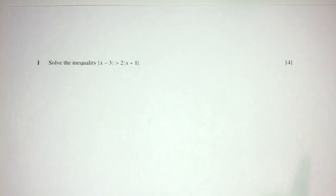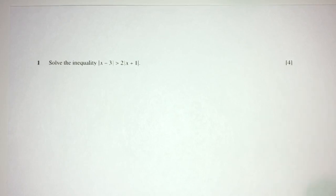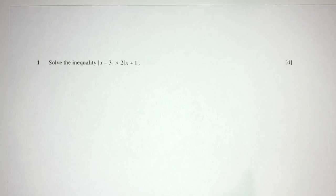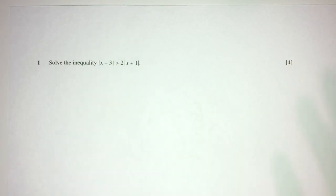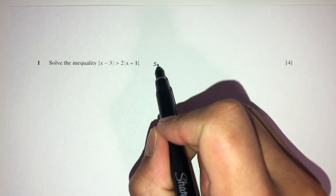Here we have question number one. We have to solve the inequality — basically find the unknown values of x for which these equations are satisfied. There are many ways of solving this question; we can sketch graphs if you want. But one way is, whenever you have modulus or you have x on both sides, we square both sides.